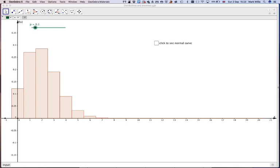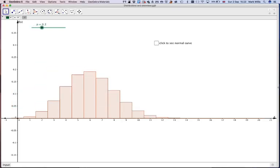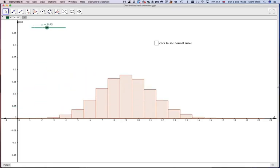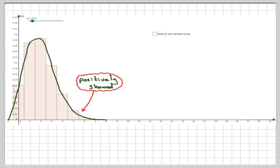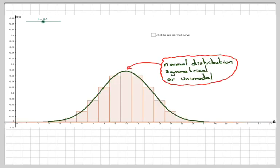And if we go back to putting p back to 0.5, like in this case, the distribution is absolutely symmetrical. And therefore, we say this distribution here is symmetrical, or unimodal, it only has one mode, and the distributions are spread either side of the mode.